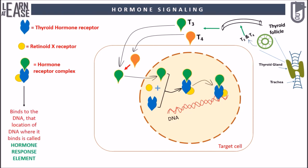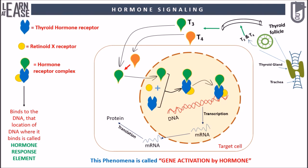This trimeric hormone receptor complex will bind to the DNA. The location on DNA at which this complex binds is known as the hormone response element. Once this complex binds to the DNA, it activates transcription of certain genes which code for mRNA. This mRNA gets translated by ribosomes in the cytoplasm and the desired protein is formed, which ultimately induces the desired effect. This phenomenon is called gene activation by thyroid hormone.